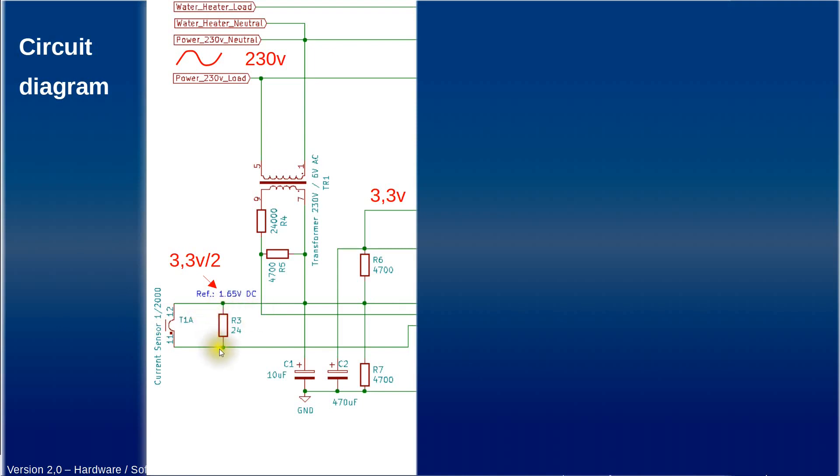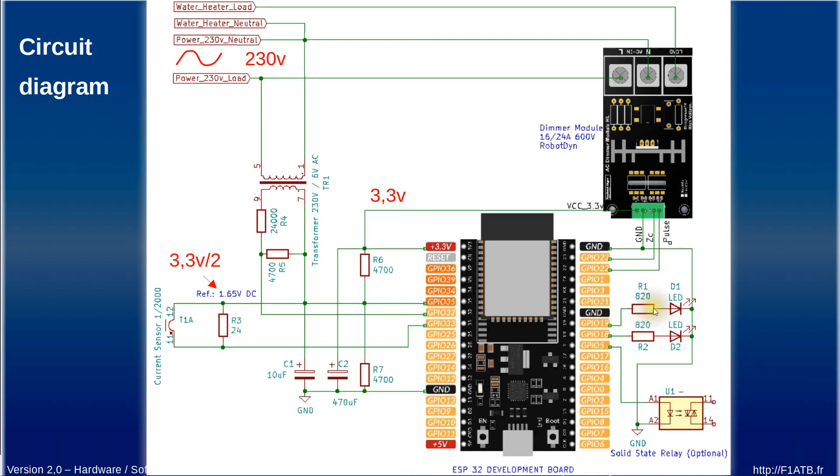in here in parallel we have the current sensor. We have this resistance of 24 ohms in order to convert the current generated by the current sensor into the voltage and we will measure this voltage on another pin on the ESP32